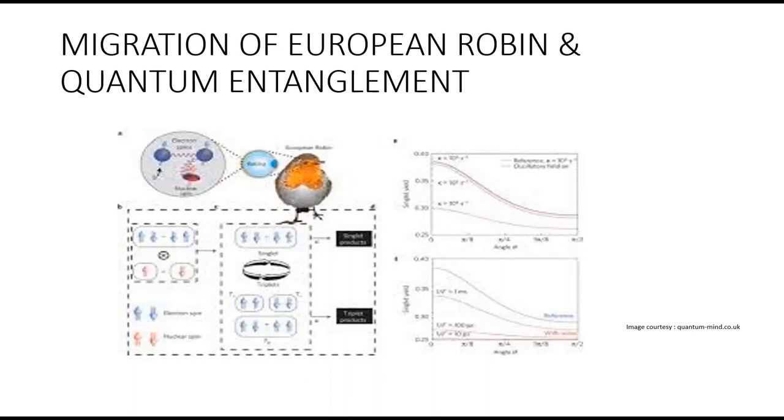Quantum entanglement is a state where electrons are spatially separated but able to affect one another. It's been proposed that birds' eyes contain entanglement-based compasses. Conclusive proof doesn't yet exist, but multiple lines of evidence suggest it. Findings like this one underscore just how sophisticated those compasses may be.